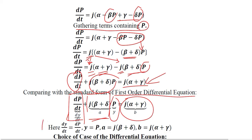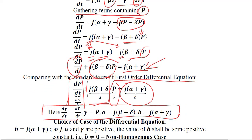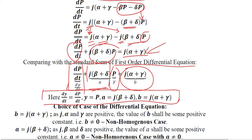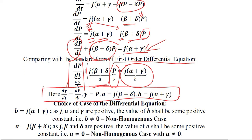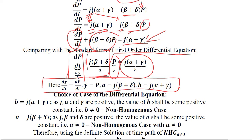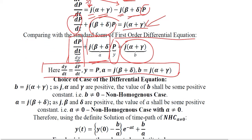We have extracted all the values — you can pause the video to verify. With this set of values we can solve the first-order differential equation. The first thing is to judge whether it is a homogeneous or non-homogeneous case, so we focus on the value of b.